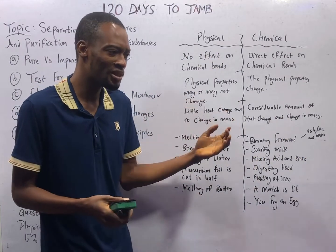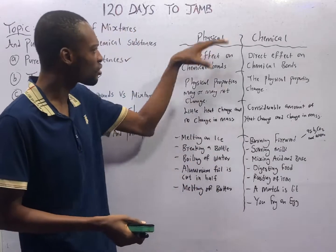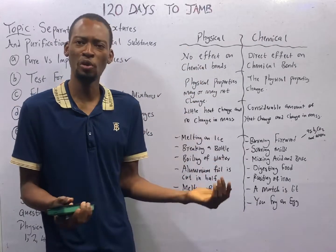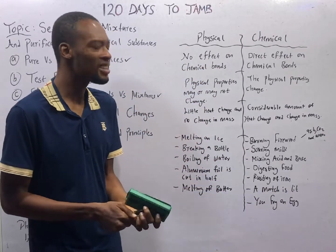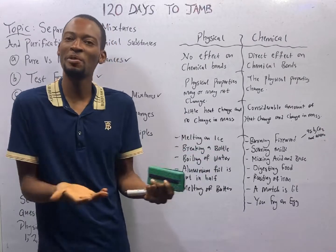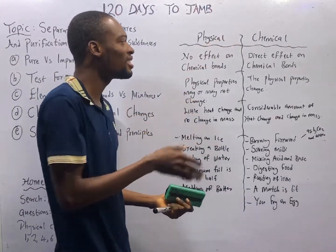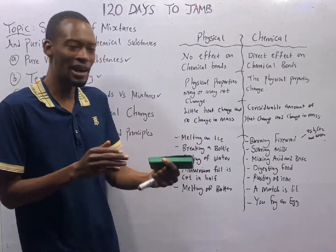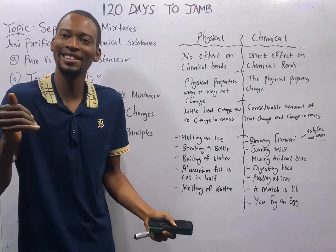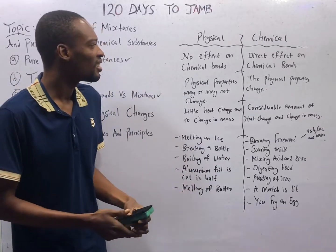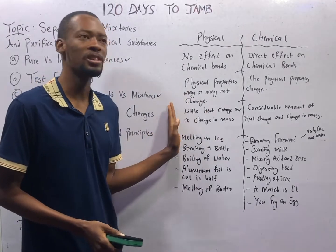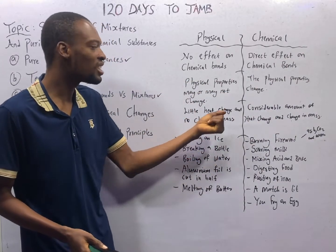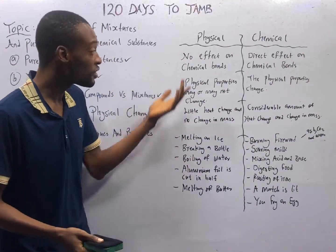Now let's quickly go through the differences. In physical changes, there is no effect on chemical bonds, which means there is no chemical reaction and no change in chemical identity. For chemical changes, there is an effect on the bonds in the molecules — the bond is broken, it requires chemical reaction, and the chemical identity of the material is affected. Physical properties may or may not change in physical changes, but physical properties do change in chemical changes.